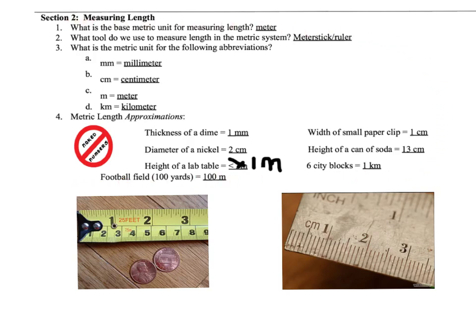The base unit for measuring length is going to be meters. When we work with any unit of measure, that meter is going to stay the same in each one of the different measurements and all we're going to be changing is the prefix. The tool that we use for measuring length in the metric system is the meter stick or the ruler.